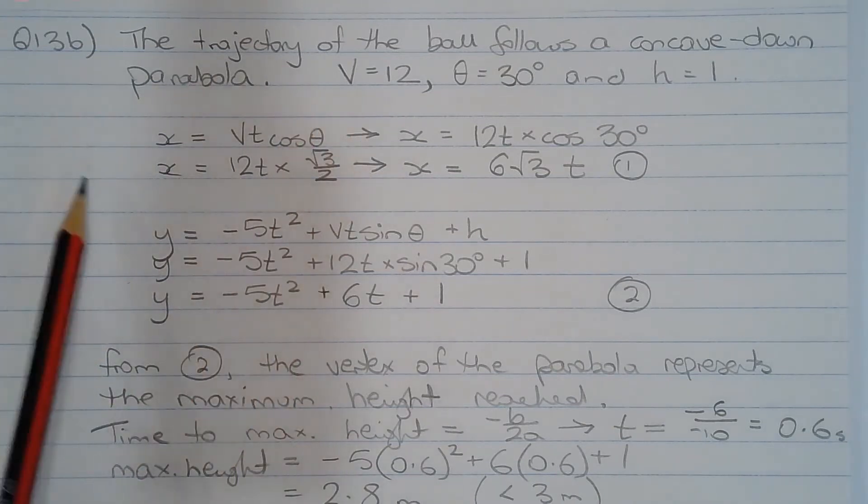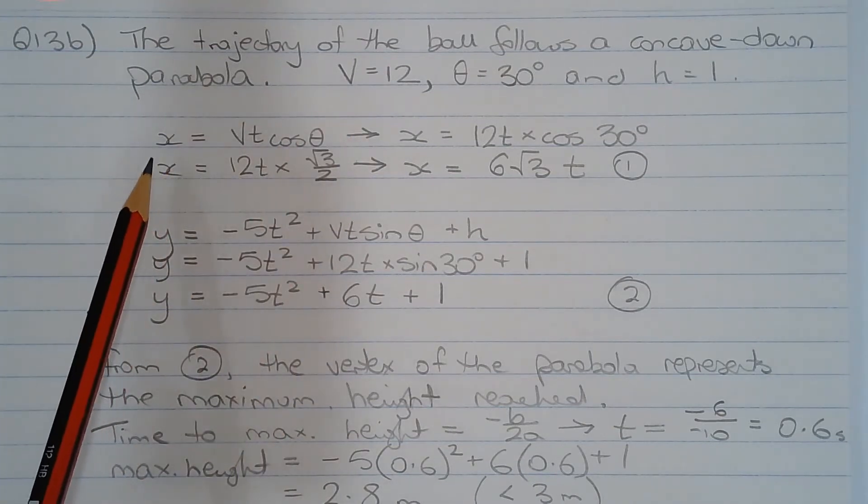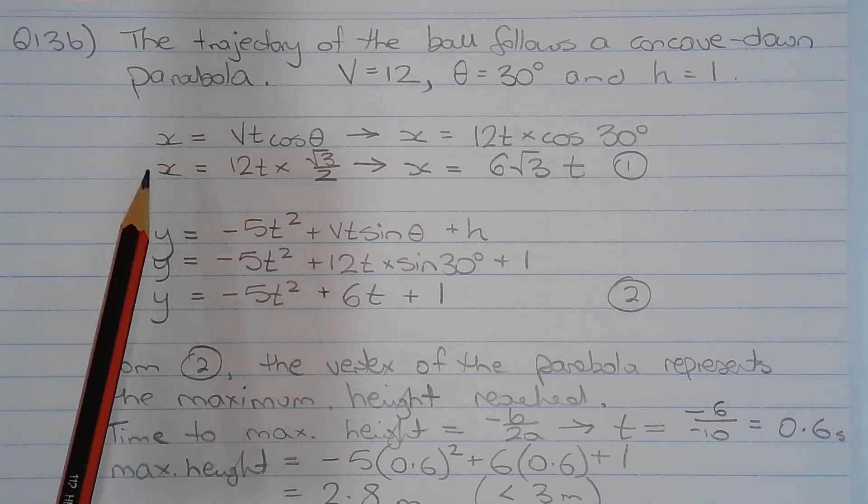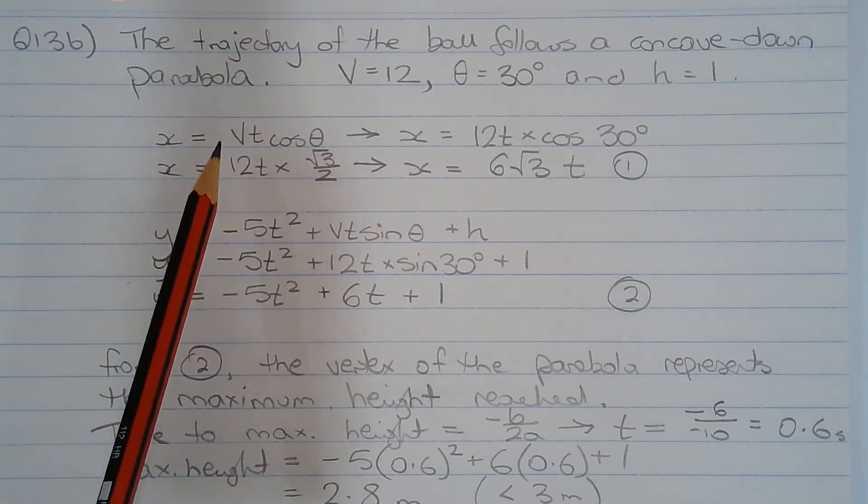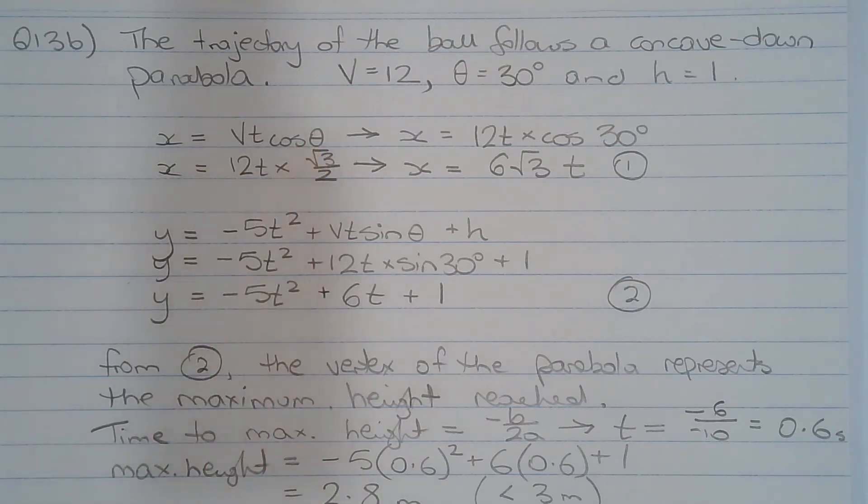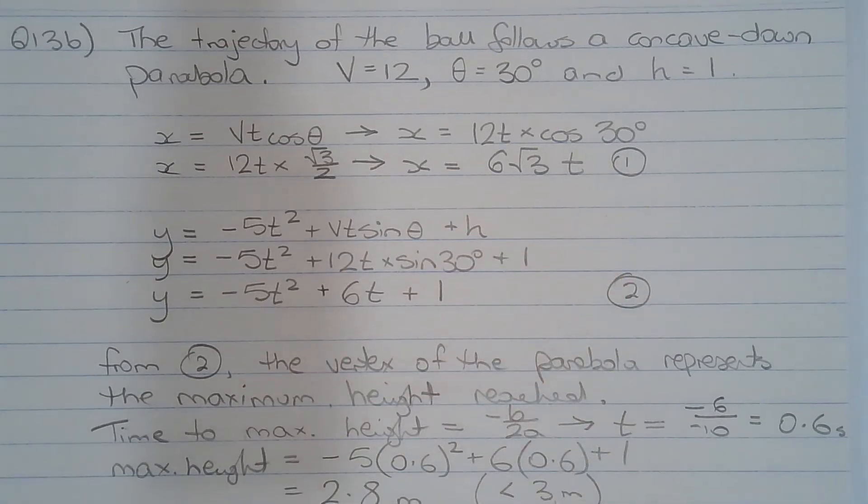Now the equation that gives the displacement in the x or the horizontal direction with respect to time is x equals vt cos theta. And substituting in v equals 12 and theta is equal to 30 degrees, we get x equals 6 root 3 multiplied by t. And we'll call that equation number 1.